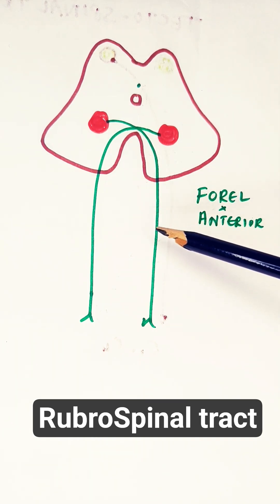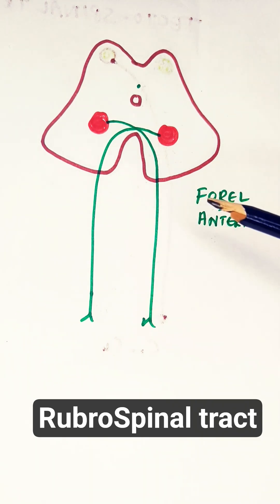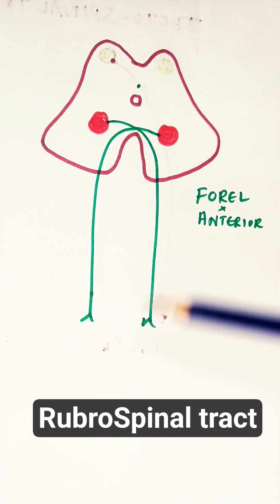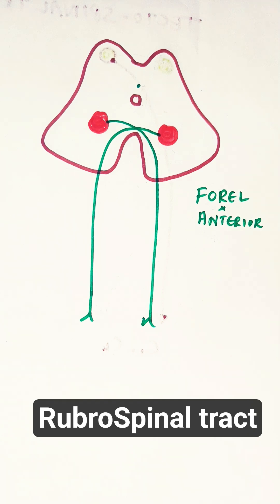When the rubrospinal tract is cut due to a lesion below the red nucleus, the hands will go into extension. The extensor pathways — mainly the vestibulospinal tract — will take over, causing decerebrate rigidity. Remember, the red nucleus is mainly important for causing flexion of the upper limb. If flexion is absent following a head injury, it means this pathway is cut and the extensor pathways have taken over.